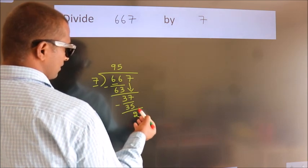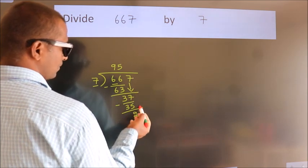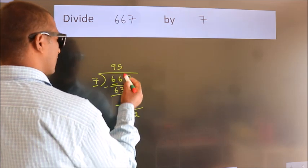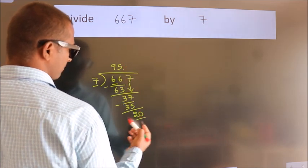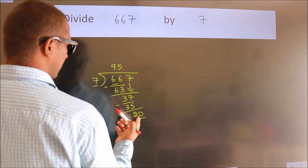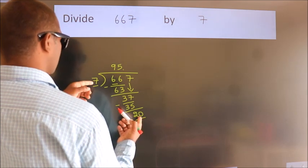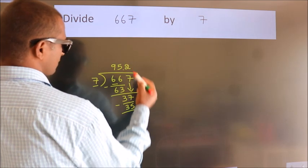After this, there are no more numbers to bring down. So what we do is put a decimal point and take 0, making 20. A number close to 20 in the 7 table is 7 times 2, which is 14.